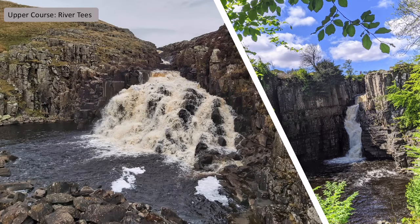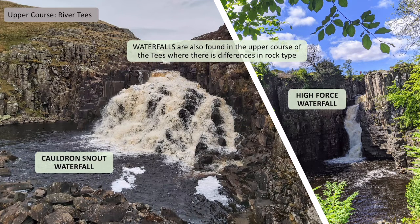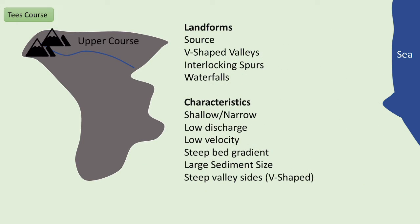Another upper course feature is waterfalls, which form where there is a difference in the resistance of rocks. Cauldron Snout and High Force waterfall are both waterfalls found in the upper course of the River Tees. So to summarise the upper course characteristics: V-shaped valley, interlocking spurs, waterfalls; not a very deep or wide river; low discharge; low velocity; a steep gradient; large sediment size; and steep V-shaped valley sides.